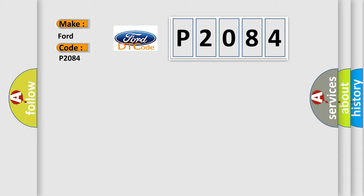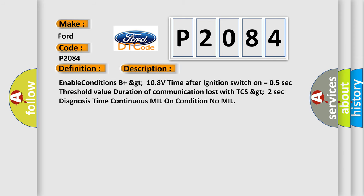The basic definition is CAN TCS communication. And now this is a short description of this DTC code. Enable conditions B plus GT 108 volts, time after ignition switch on equals 05 seconds, threshold value duration of communication lost with TCS GT 2 seconds, diagnosis time continuous, MIL on condition no MIL.